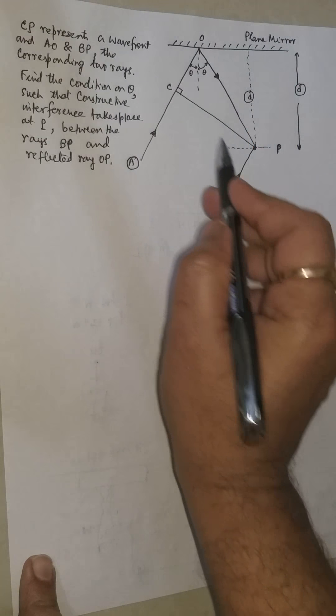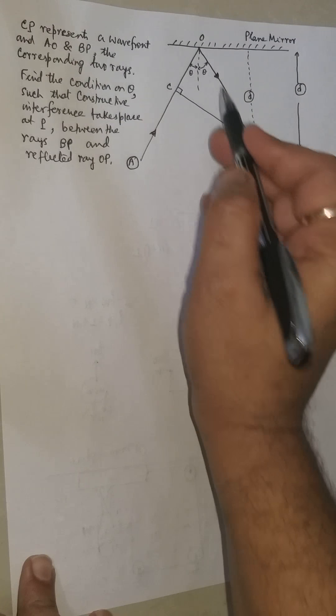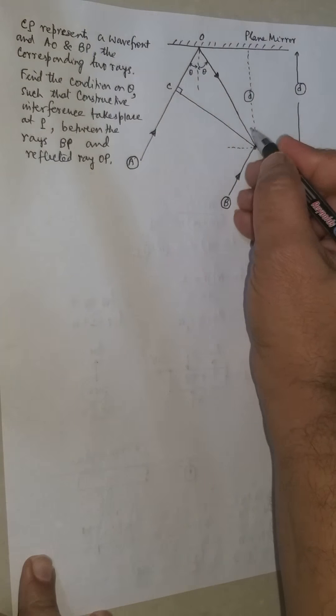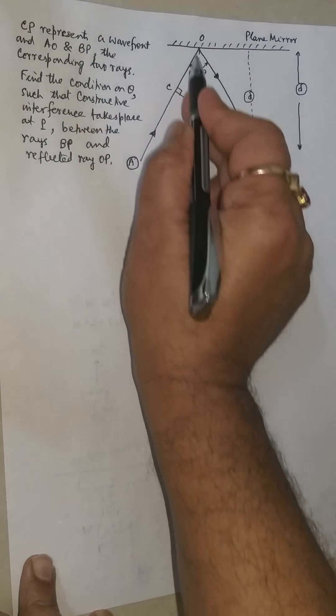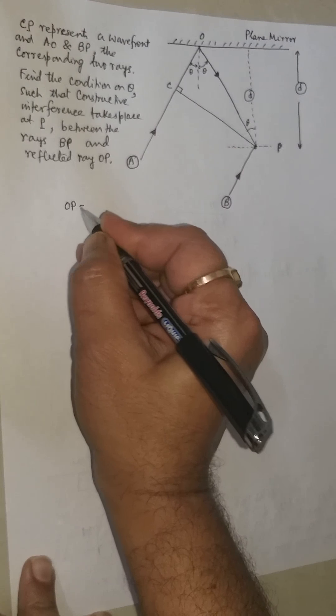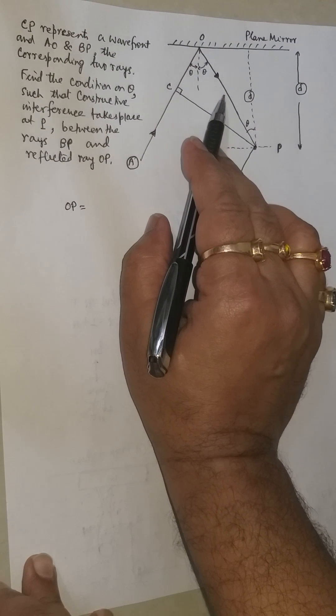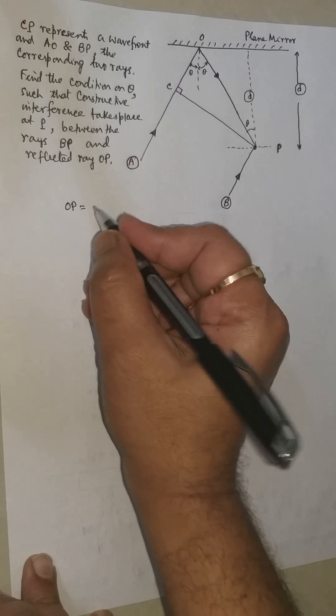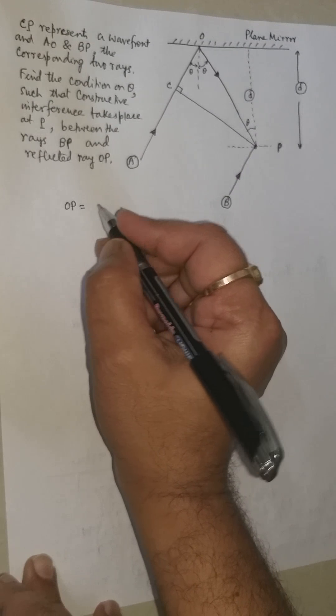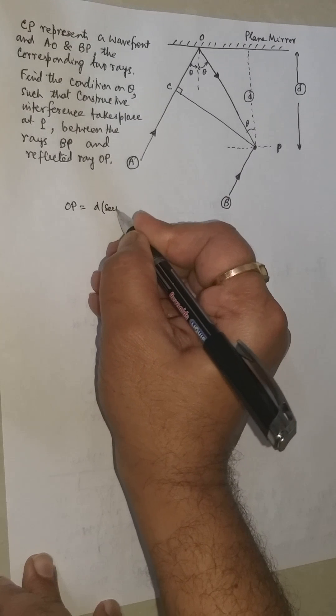From this triangle, we can say that if this is theta, then this should also be theta. Then OP, this is D, so OP can be written as D times sec theta. So D sec theta.